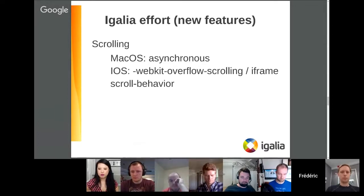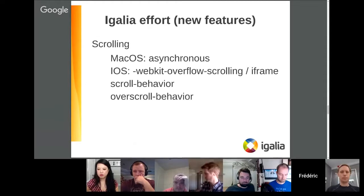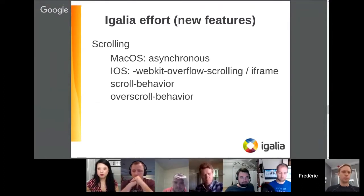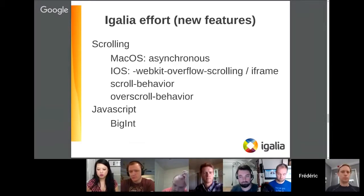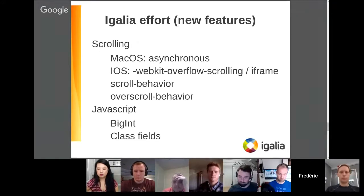Other features include smooth programmatic scrolling — we already have some patches submitted for review. Overscroll behavior, a feature introduced by Microsoft, is something we have started experimenting with; it works on Mac but on iOS we need Apple to add new system APIs to make it possible. Regarding JavaScript, we've done a pretty good job on BigInt — most operators are implemented and we are continuing to polish things. For class fields, we have submitted patches for review and are waiting for feedback from Apple.